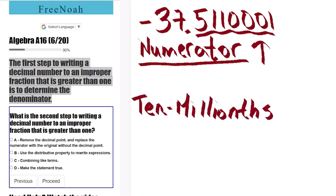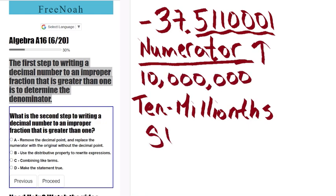10 millionths. So we simply write the denominator as 10 million. And that's step 1.